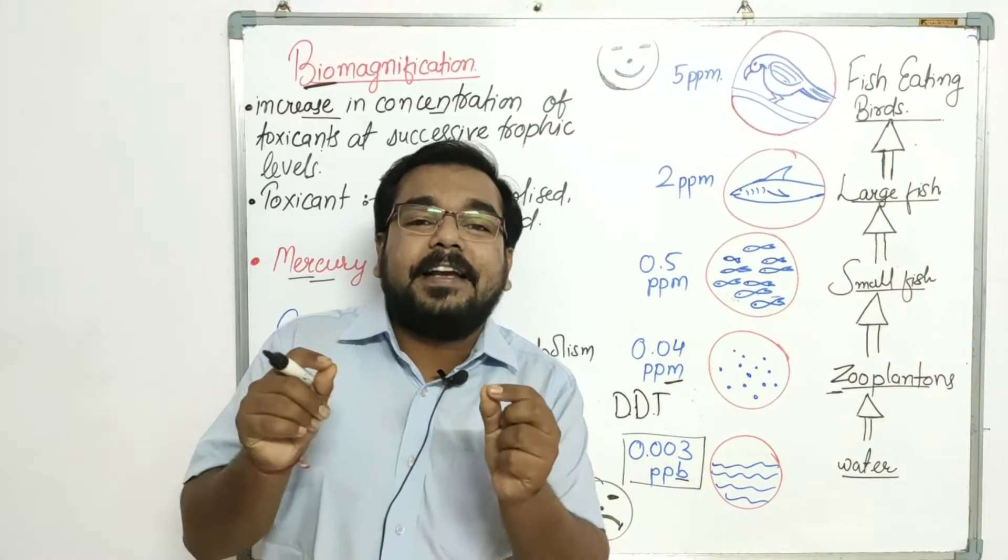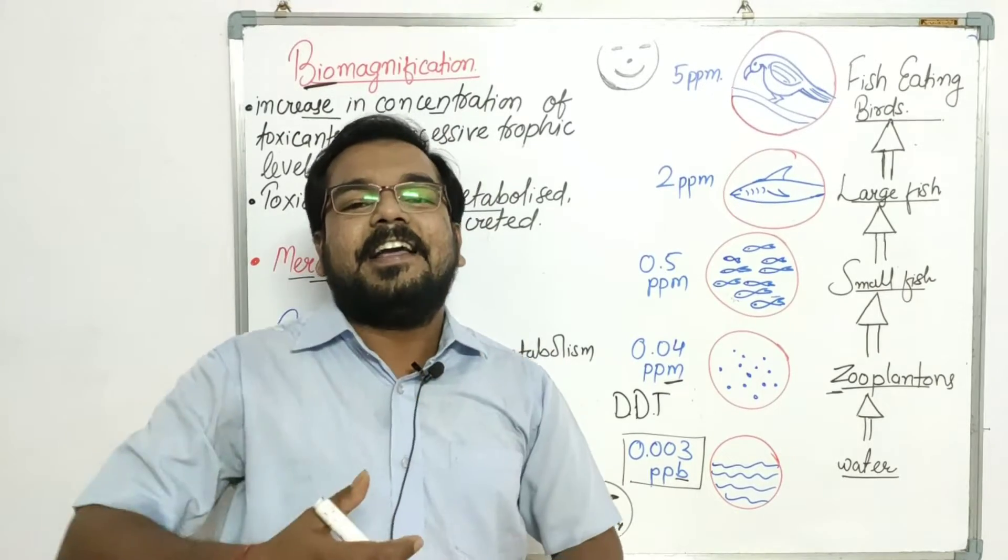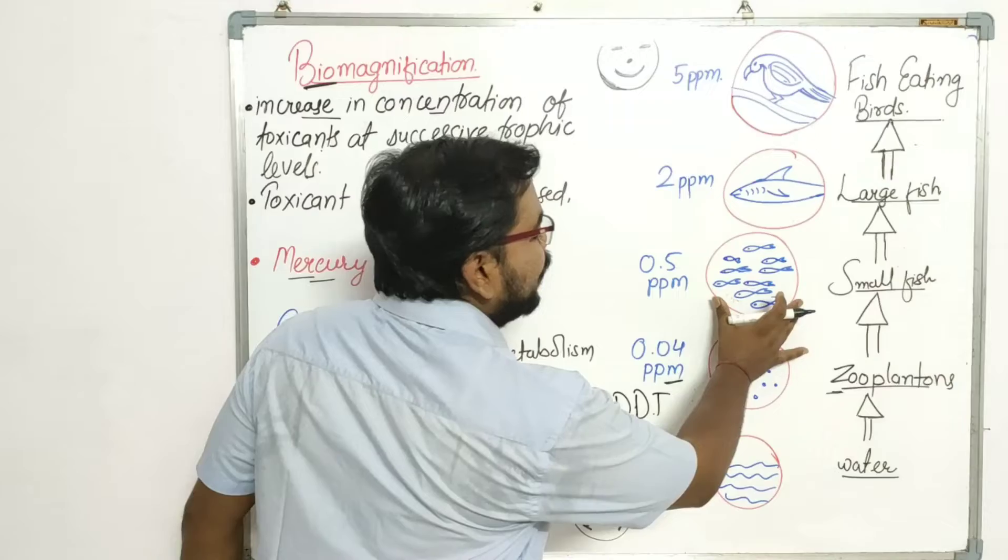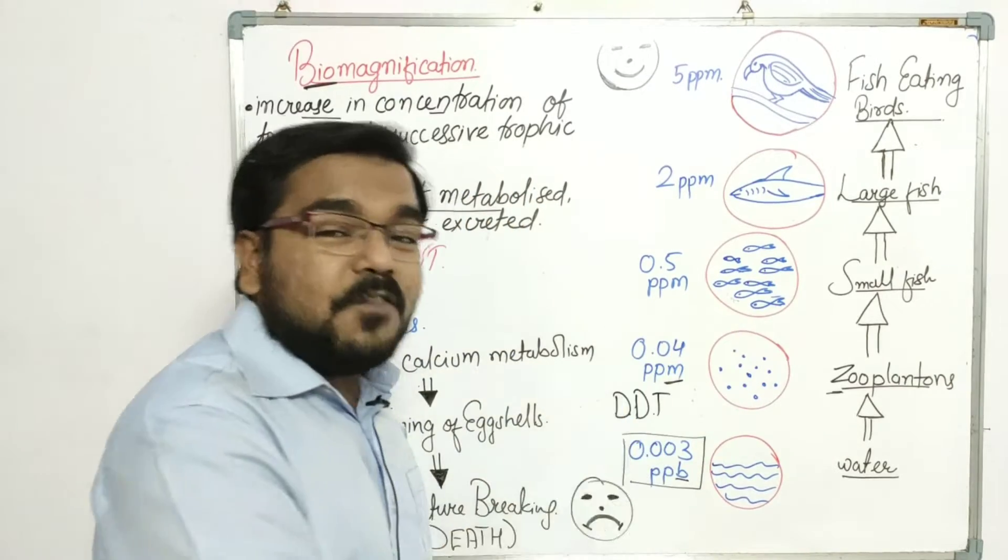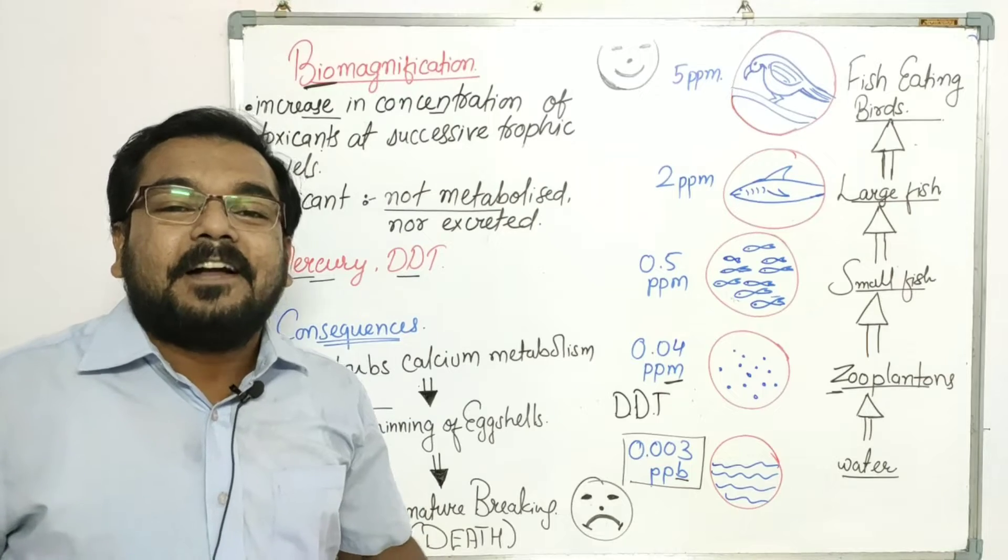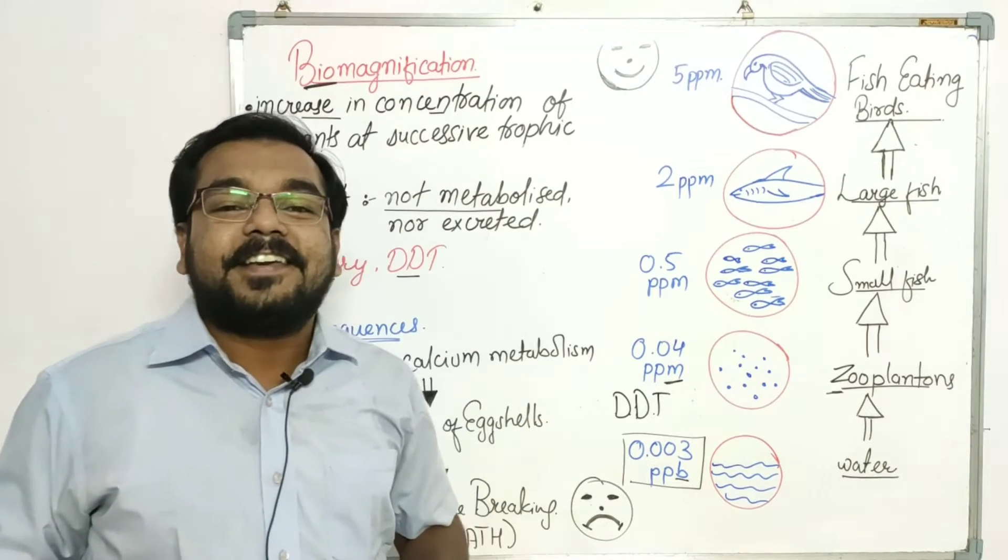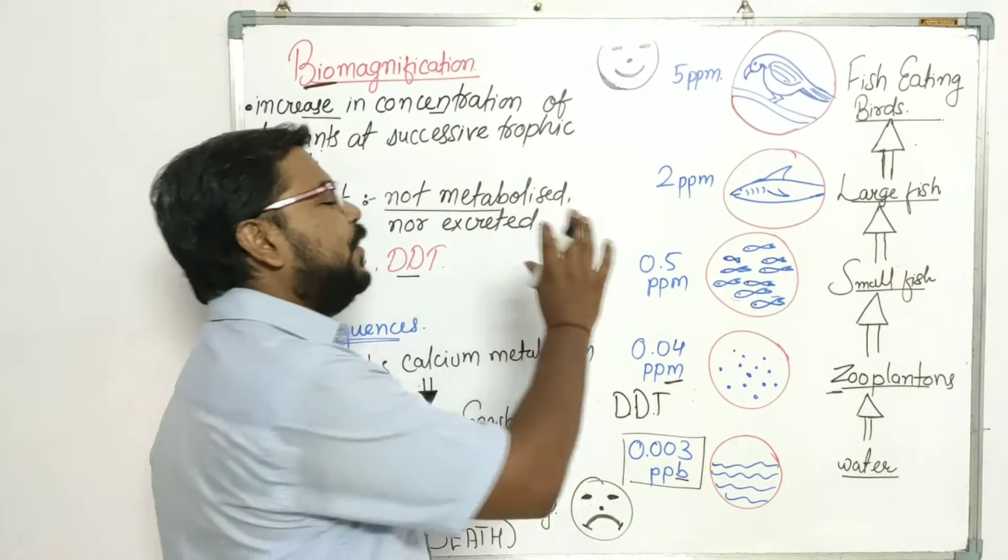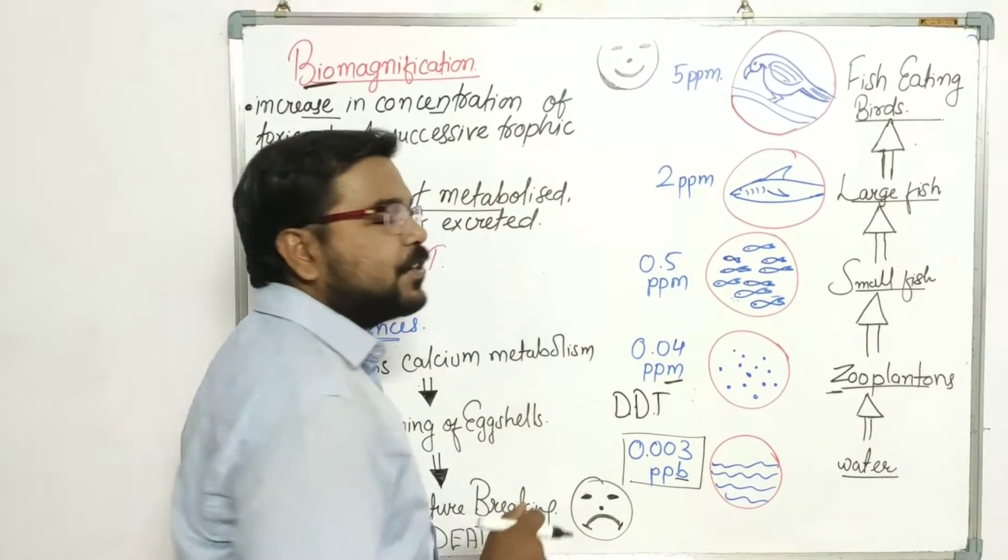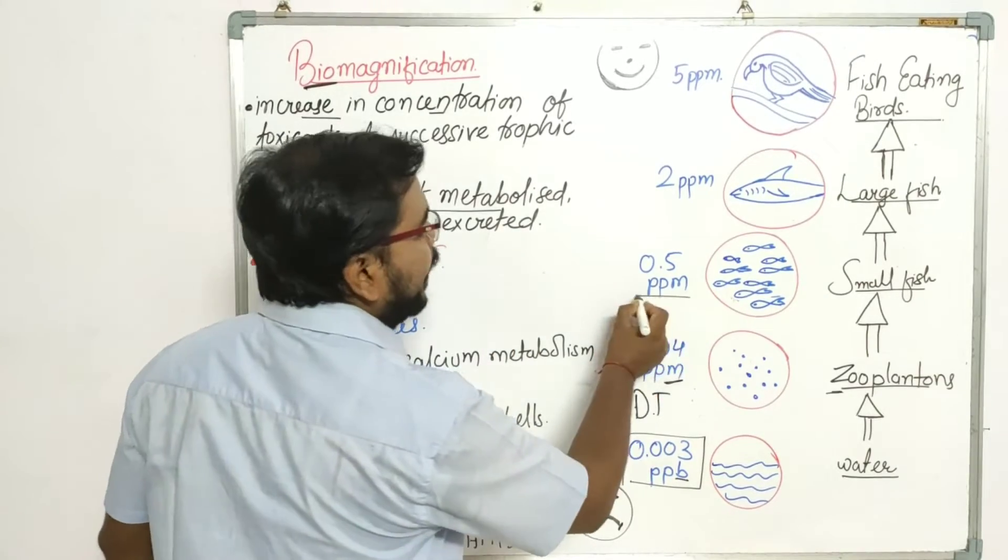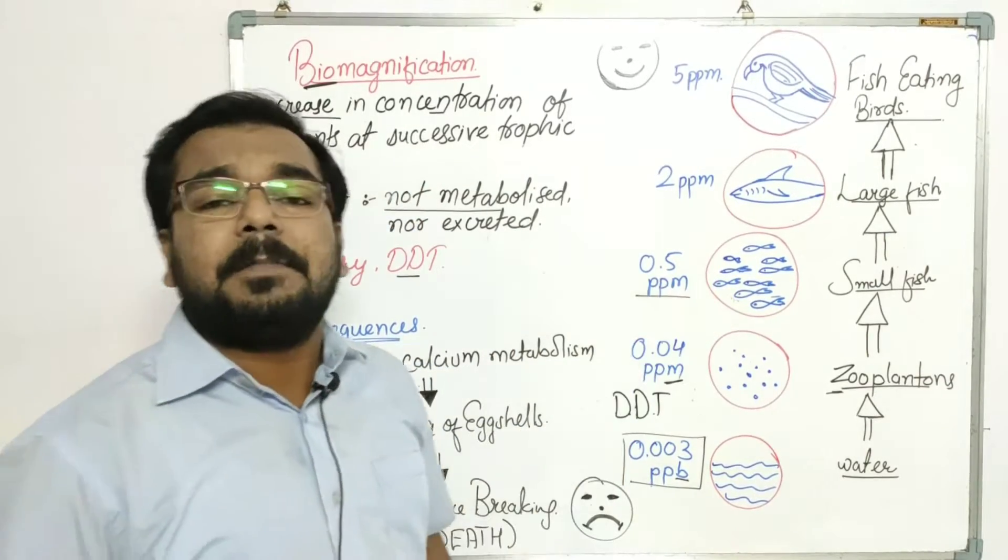So small fishes eat zooplanktons. When they eat zooplanktons, what are we seeing? Along with the zooplanktons, this DDT will accumulate. DDT will accumulate. Now DDT, will it metabolize or excrete? So slowly, slowly, this small fish will accumulate and now this concentration will increase. It will be 0.5 ppm, parts per million.